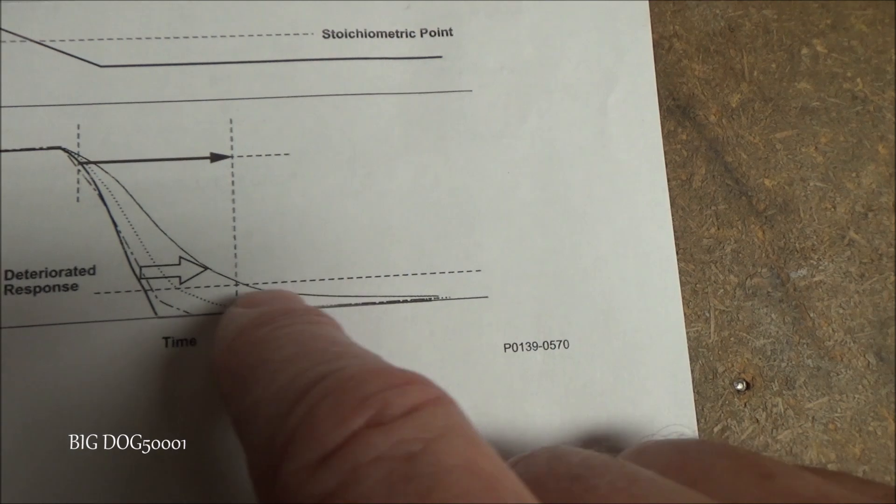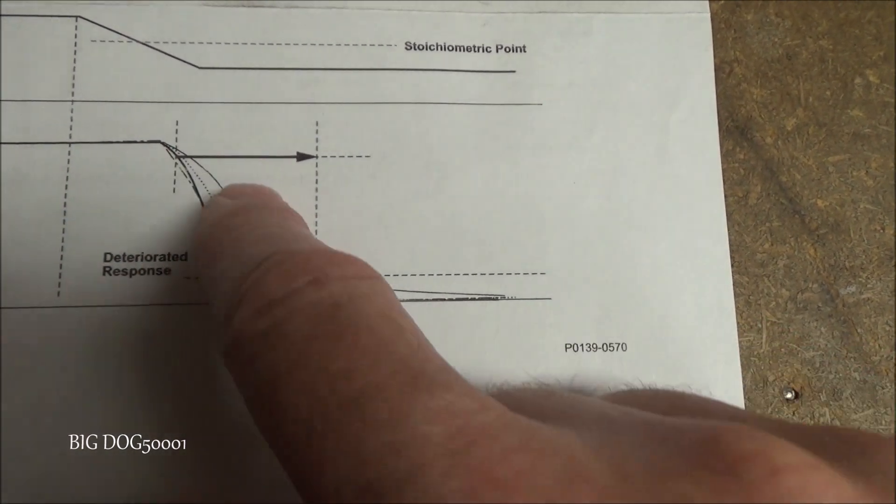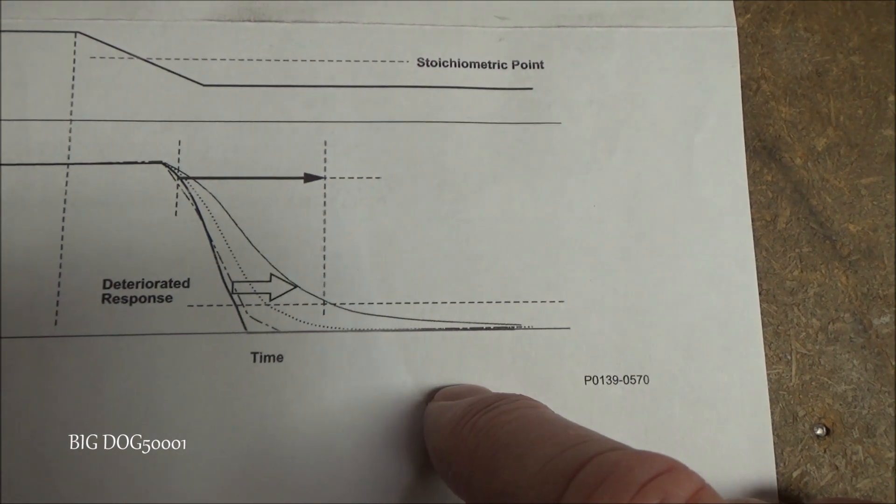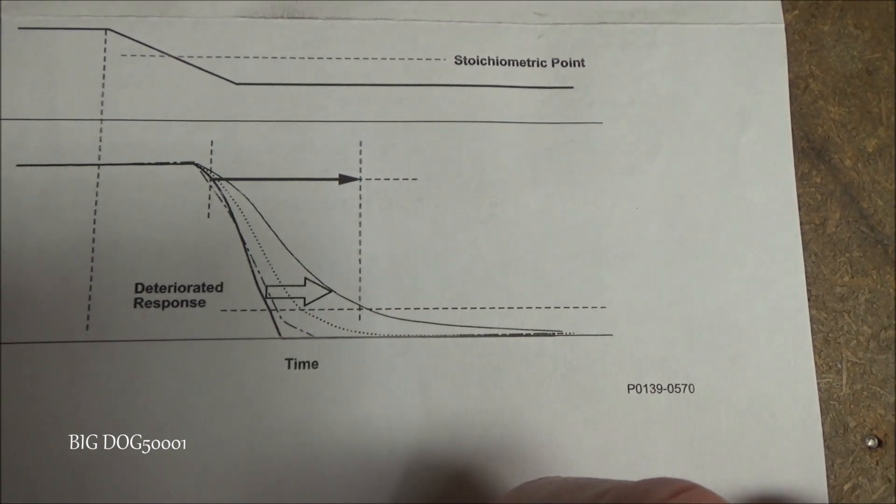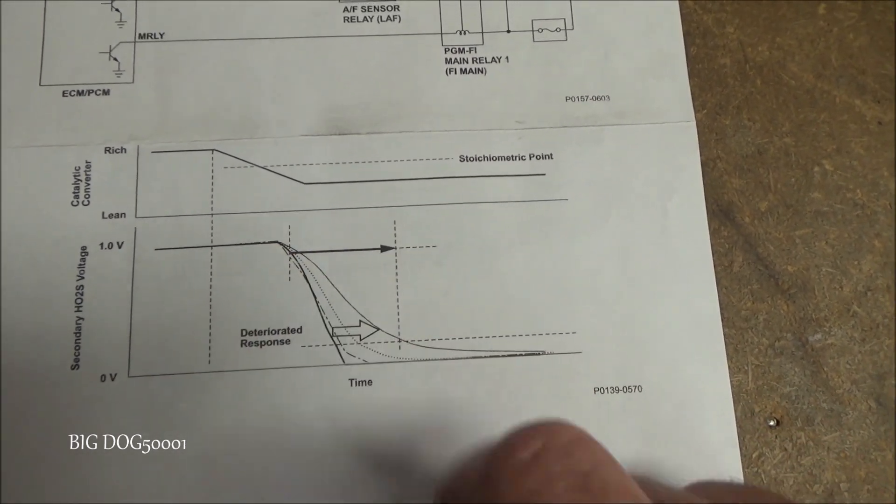And so this is what the computer is flagging. When it sees that it's delayed coming down here into our working area it's flagging a code. So we're gonna go look on a scan tool and see if we can see something like this.